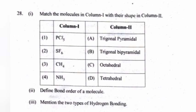Mention the two types of hydrogen bonding. Answer: Intermolecular hydrogen bond and intramolecular hydrogen bond.